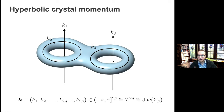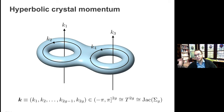In response to a question about counting states in momentum space: for now I am looking at an infinite lattice, but the second half of the talk will focus explicitly on finite lattices and counting the number of states. For now, what we have is a continuous four-dimensional Brillouin zone.